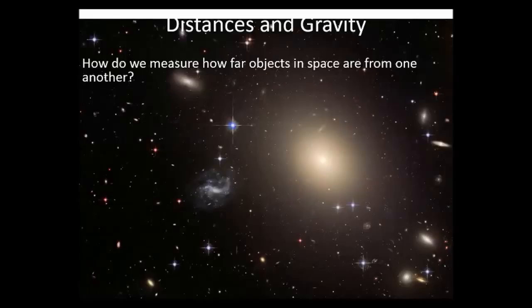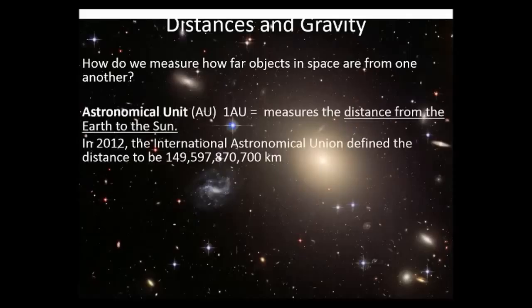Scientists use many different ways to measure how far away objects in space are from another. Two we're going to learn about today are astronomical unit, which is the distance from the Earth to the Sun.